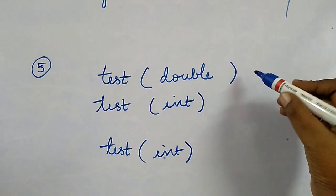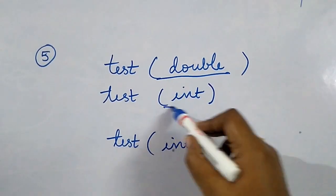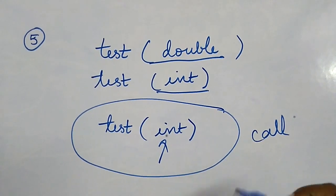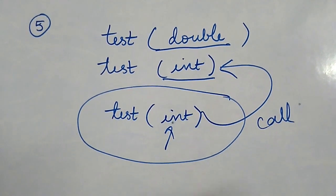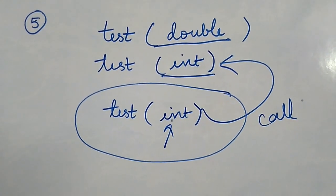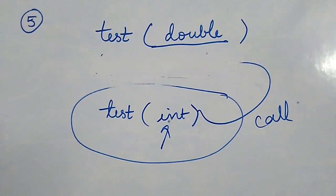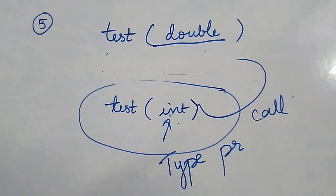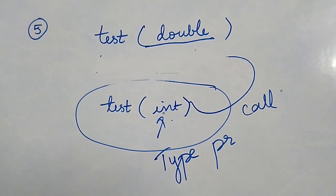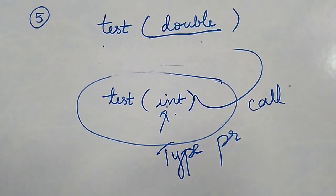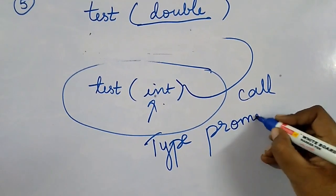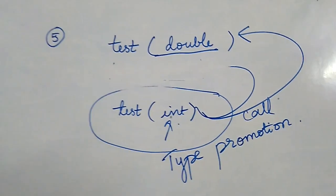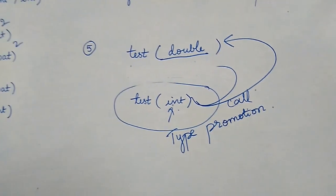In this case, two overloaded methods exist — one taking double and one taking integer. When an integer value is passed, the integer-parameter method is called because there is an exact match. However, if the integer-parameter method is removed and only the double-parameter method exists, type promotion rules are applied: the integer is promoted to double and the double-parameter method is called. There will be no compilation error. This is all about method overloading.